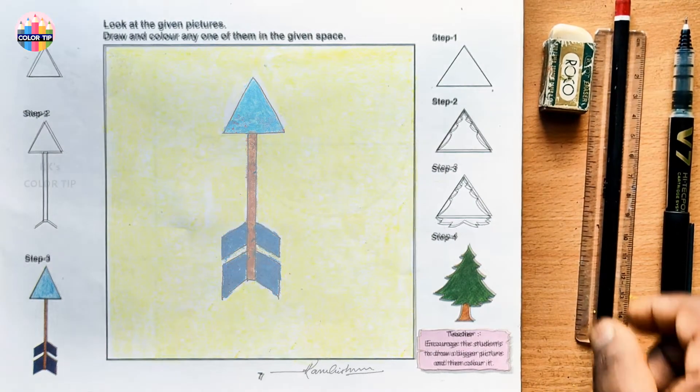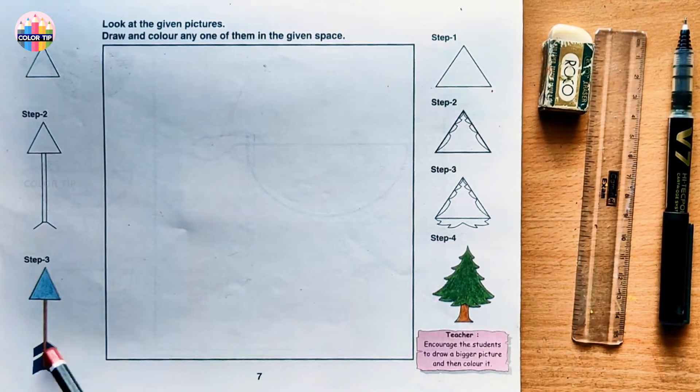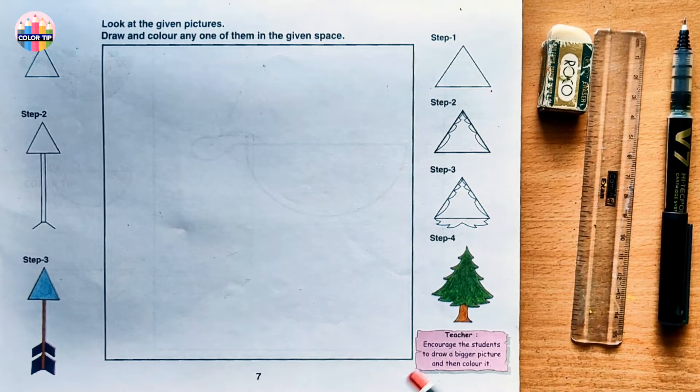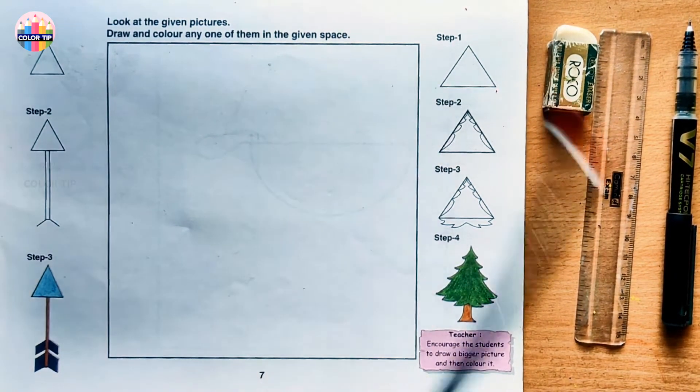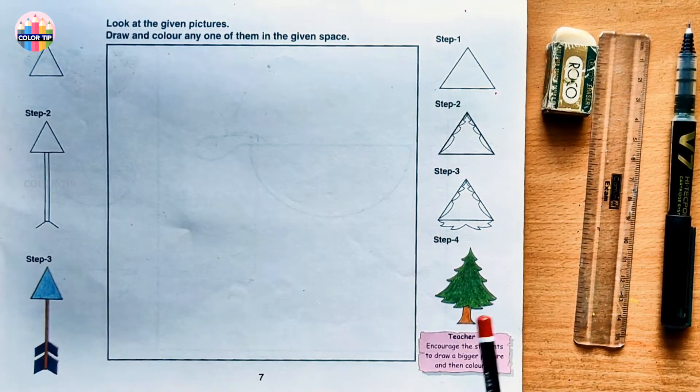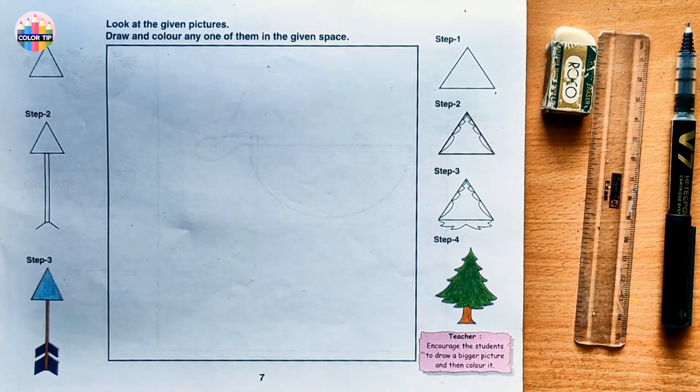Step-by-step class 1, page number 7. Look at the given pictures with the triangle. The basic shape of this picture is triangle. It's constructed with triangle. One is an arrow here and another one is a tree. Let's draw an arrow.